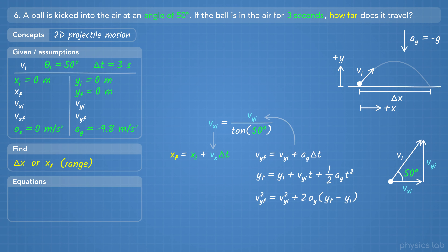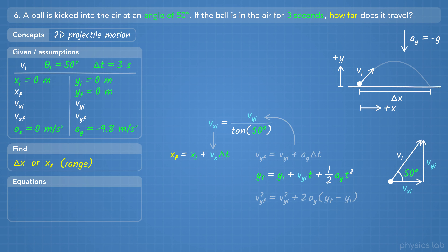How do we find the initial y velocity? We're given the amount of time the ball is in the air. The time in the air is determined by the y motion — it's just like one-dimensional projectile motion. The ball has some initial y velocity, moves up, and then falls down. If we know the initial and final y positions and the acceleration, there's only one initial y velocity that would cause the ball to be in the air for 3 seconds. Looking at this equation, we know the initial and final y positions, the time, and the acceleration, so we can solve for the initial y velocity.